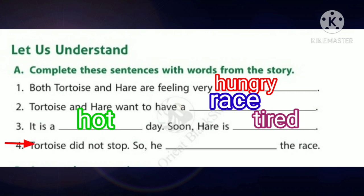Fourth one: tortoise did not stop, so he dashed the race. My dear children, who won the race? Yes, tortoise. How did he win the race? Because he did not stop anywhere. So the answer: tortoise did not stop, so he won the race. The answer is won — W-O-N. All of you write the answer.